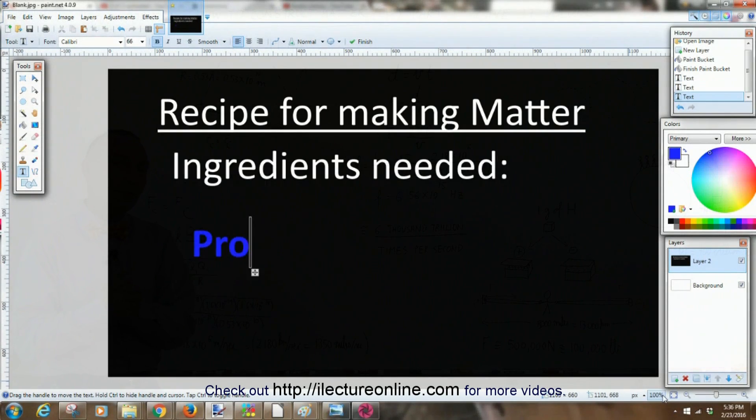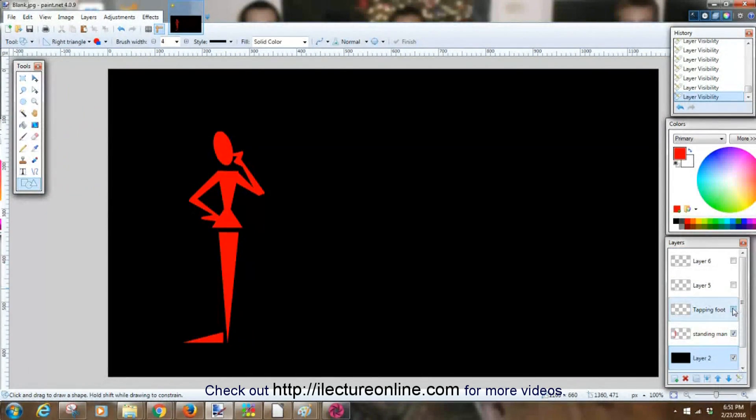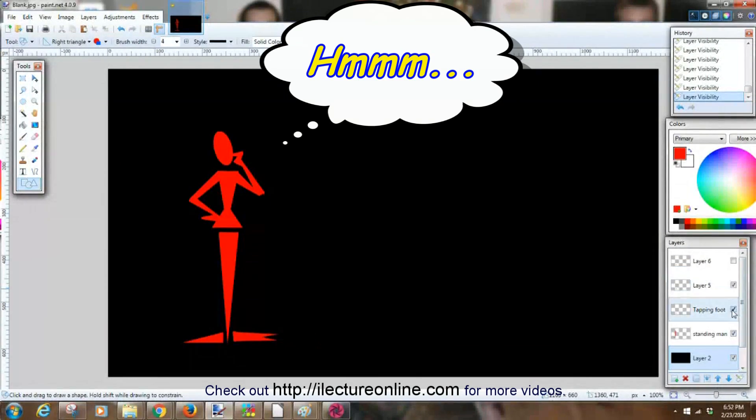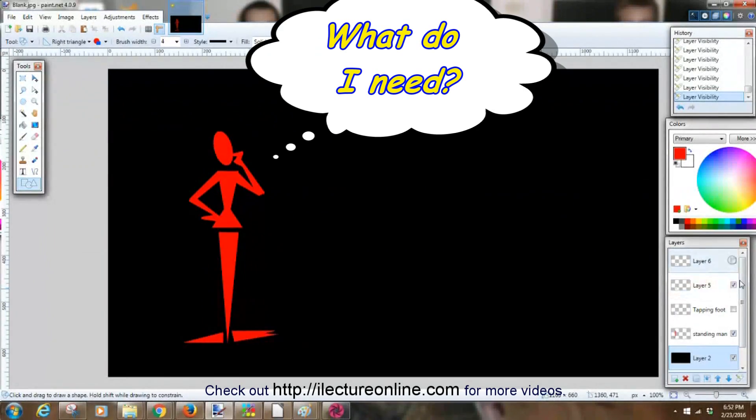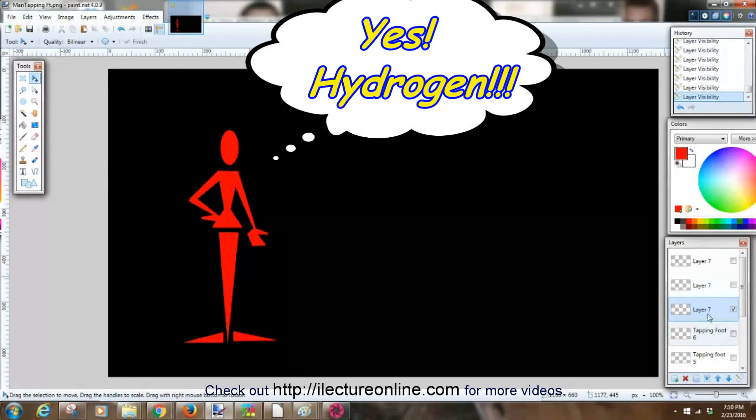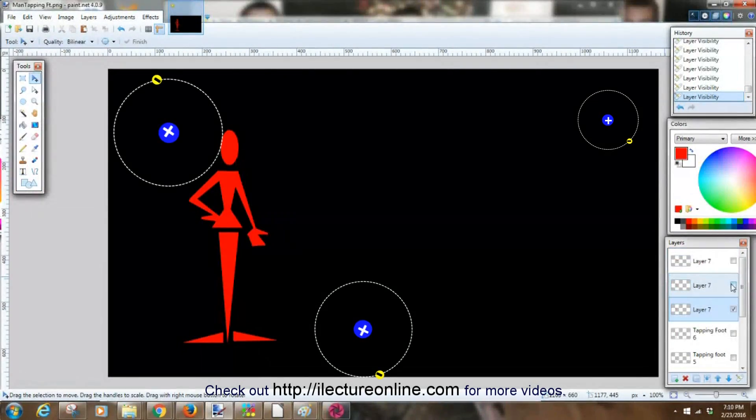Welcome to Electron Online. In this video, we're going to explore the concept of making matter. Let's say that you're in charge of your universe and you had to fill it with matter. In our universe, almost 75% of all the matter is made up of hydrogen. So let's go take a look and see what hydrogen looks like.